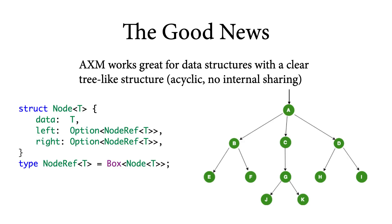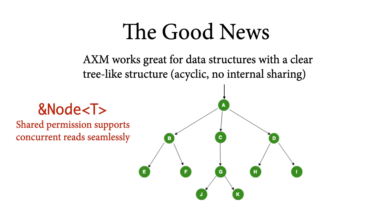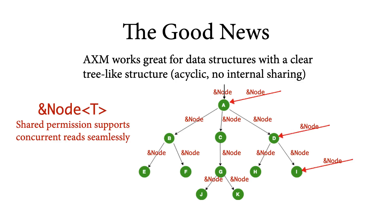That means that if we have a mutable reference to the root of the tree, we can safely use that to obtain a mutable reference to any node in the tree. This tree data structure also works great with shared references: if you have a shared reference to the root, you can use that to obtain shared references to all the nodes in the tree, and you can duplicate those shared references freely so that multiple threads can read from the tree concurrently.